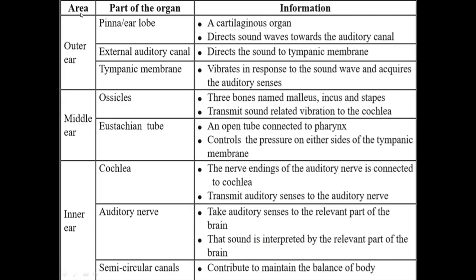This chart shows the areas: outer ear, middle ear, and inner ear. The parts include the pinna or ear lobe, the external auditory canal, and the tympanic membrane. The external auditory canal directs sound to the tympanic membrane, which vibrates in response to sound waves and activates the auditory sense via the ossicles in the middle ear and the inner ear.